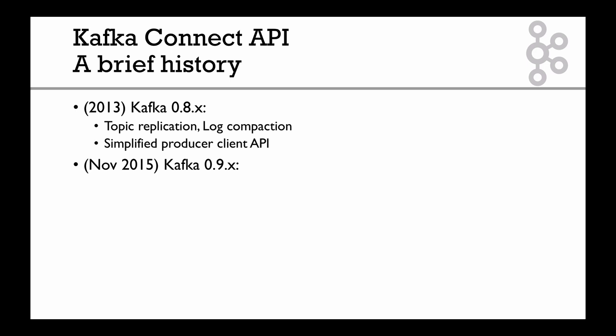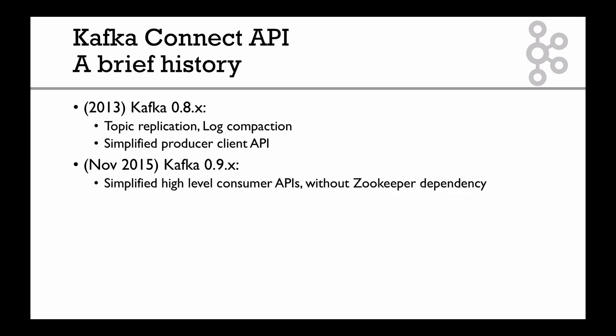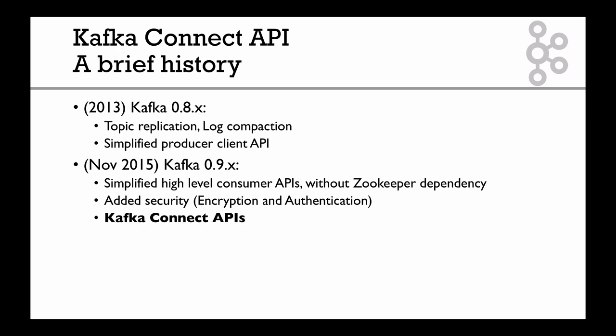Then came Kafka 0.9 in November 2015. The new simplified high-level consumer API without the Zookeeper dependency was a new feature. It added security with encryption and authentication, and most importantly for this course, it added the Kafka Connect APIs in its first version.